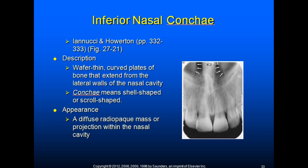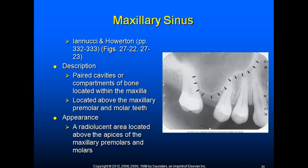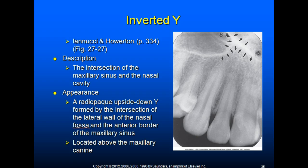The maxillary sinus is the size of a small pea at birth and is composed of dense cortical bone. It appears as radiolucent areas located above the apices of the maxillary premolars and molars. The inverted Y is the intersection of the maxillary sinus and the nasal cavity, appearing as a radiopaque upside-down Y formed by the intersection of the lateral wall of the nasal fossa and the anterior border of the maxillary sinus, located above the maxillary canine.